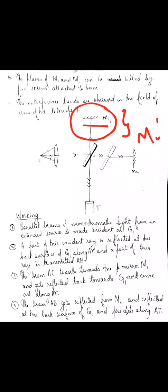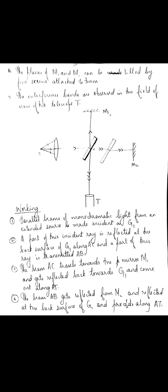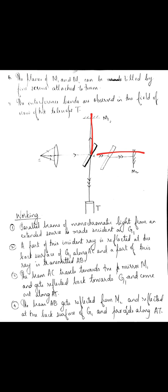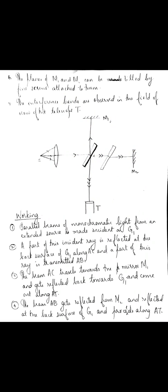The path difference between M1 and M2 will give constructive interference when equated to N·λ. If I find out the path difference between glass plate G and M1, and glass plate G and M2, and equate it to (2N+1)·λ/2, I get the condition for destructive interference.